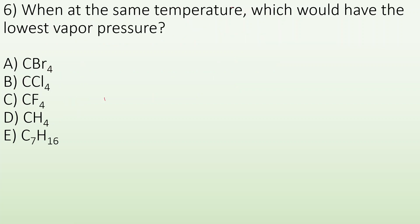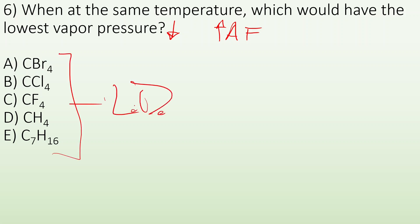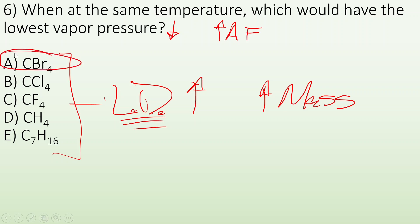Number six: when at the same temperature, which substance would have the lowest vapor pressure — meaning it would be the least likely to go into the gas phase? If I want the lowest vapor pressure, I want the strongest attractive forces, holding onto each other so well that it's difficult to go into the gas phase. All options are nonpolar, so they all have London dispersion forces. For the strongest attractive forces, I want to increase the mass, so I'm looking for the most massive of my options — that is choice A.